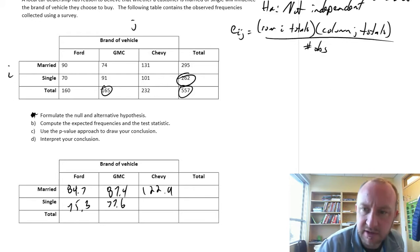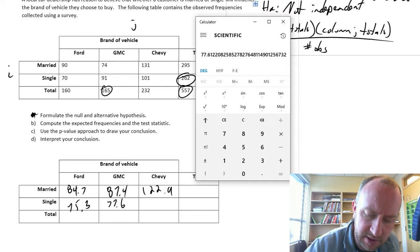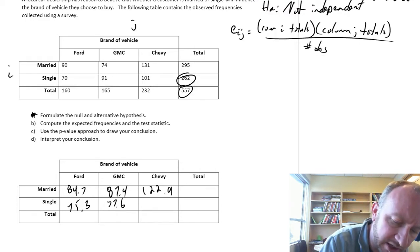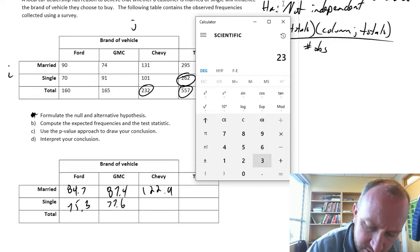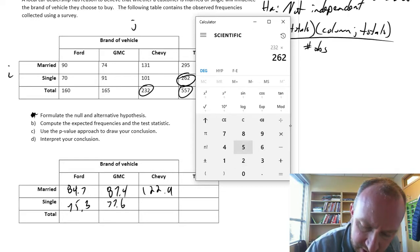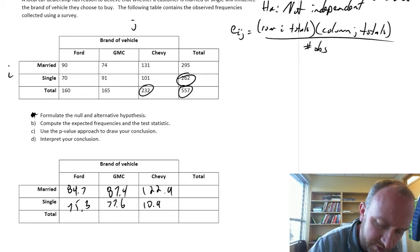You know, if there's anything you've learned in a statistics course by now is that it is full of tedious calculations. My gosh, it just never ends. So the next one, 232 times 262 divided by 557, 109.1.